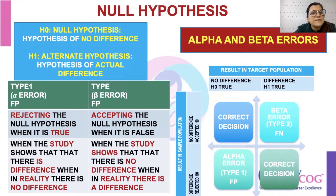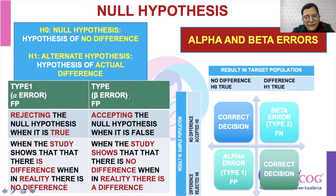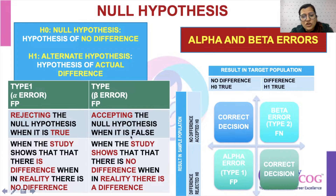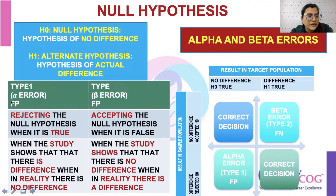Based on this, there are two types of errors in biostatistics. Type 1 error is the alpha error — this occurs when the null hypothesis is rejected when it is actually true. That means the study shows there is a difference when in reality there is no difference. This is also known as a false positive.